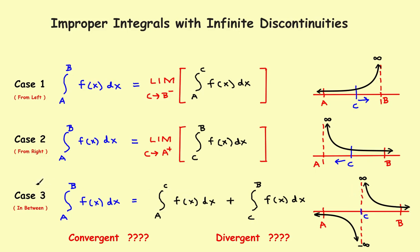This will be a Case 3 problem, and we'll do it like this. Since you have an asymptote in the middle, what you have to do is split the problem into two parts. We want the integral all the way from a to b, but because of the asymptote in the middle, you have to split it: first find the integral from a to c, which gives you this part, then add that to the integral from c to b. You have to split it up into two parts and do each part separately.